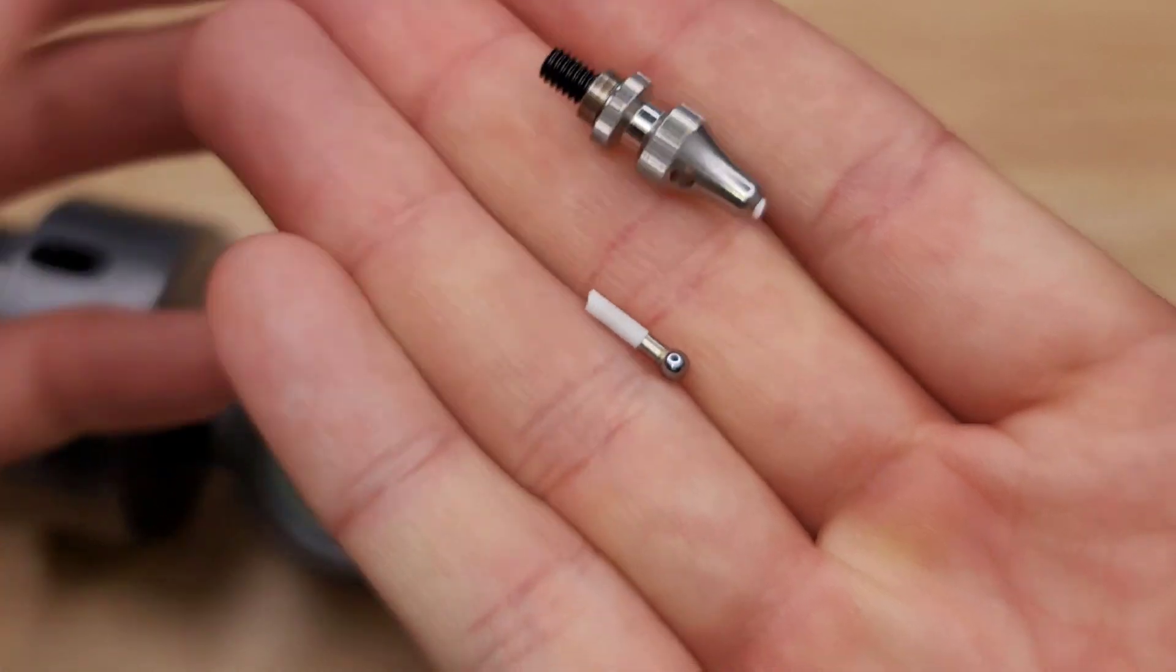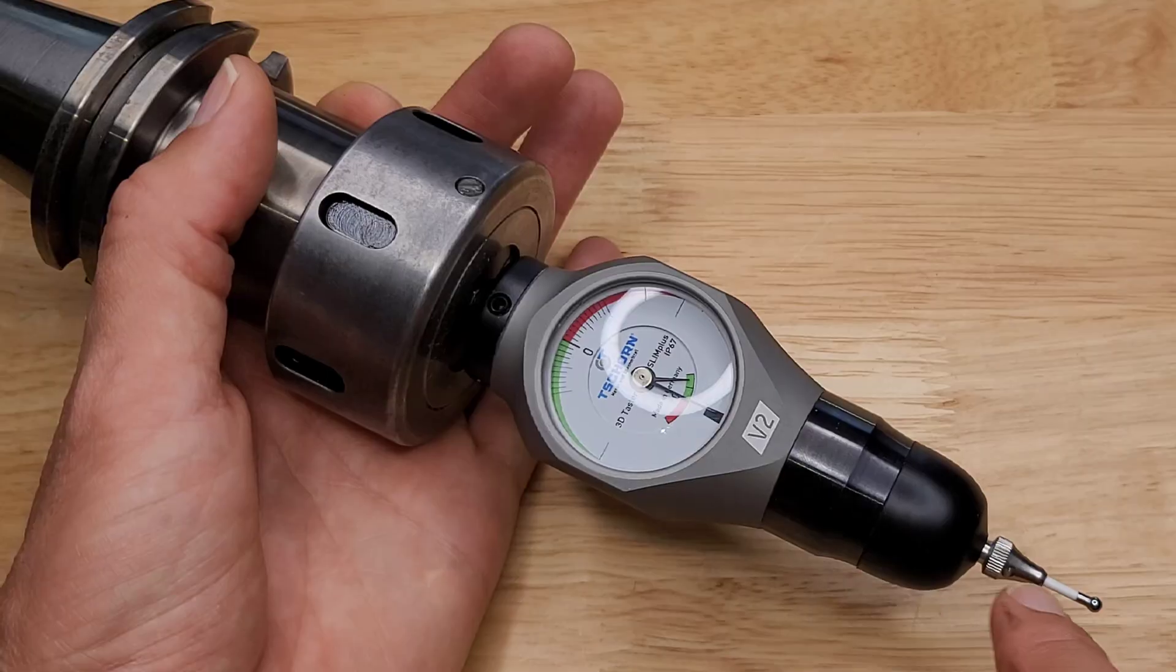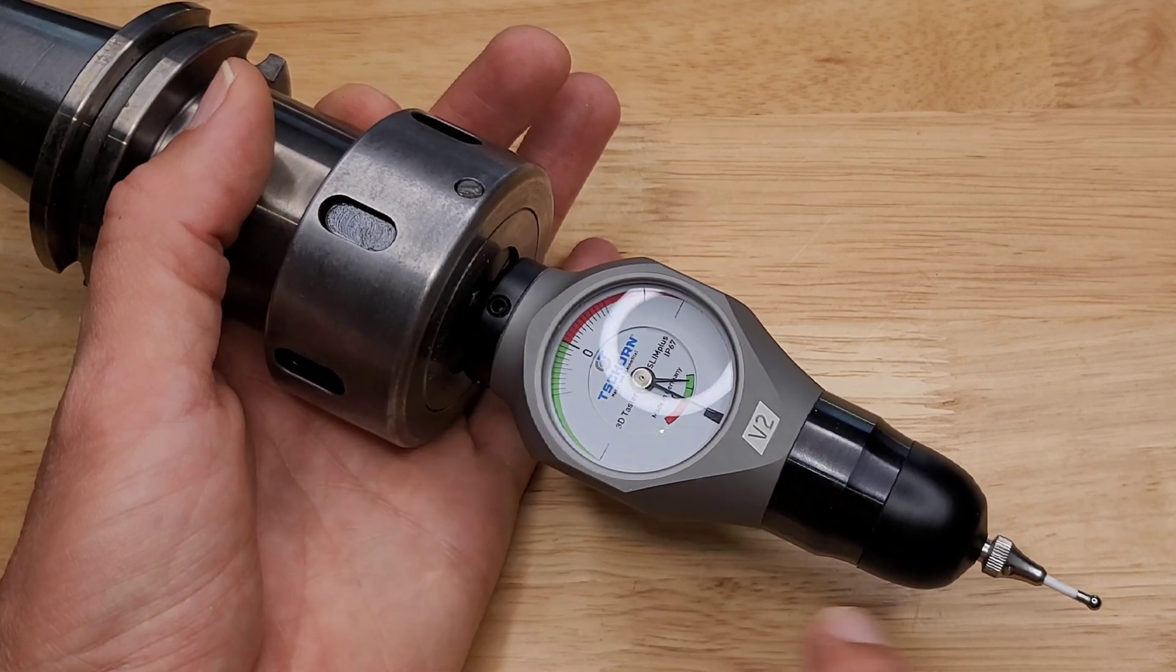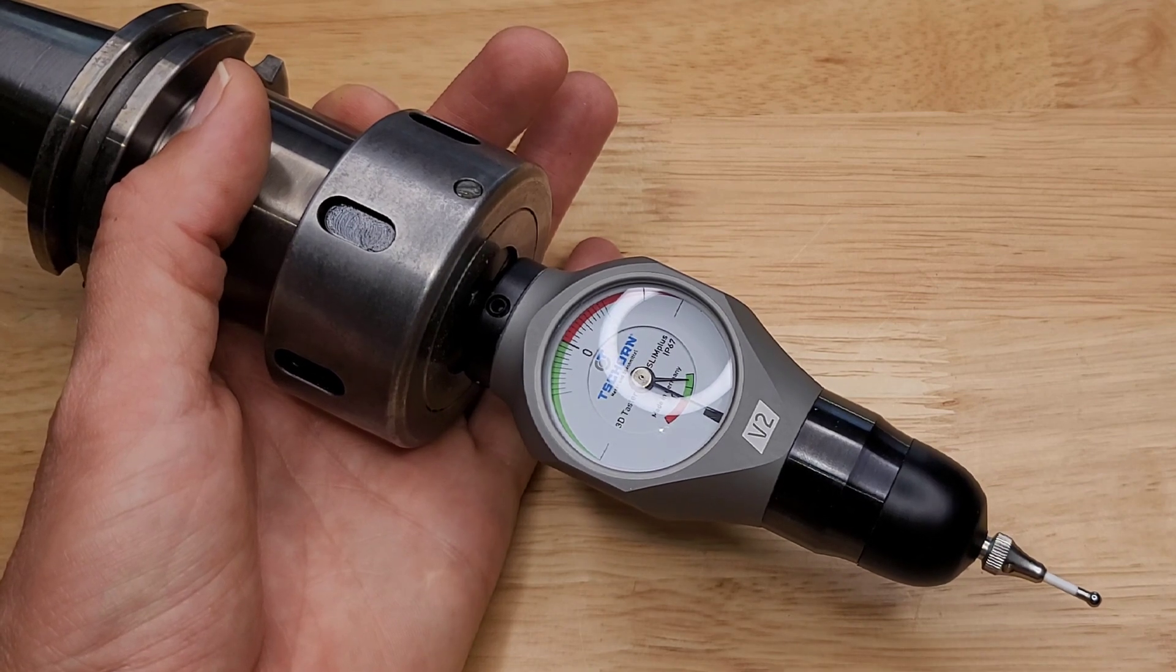And that's it. That's all you need to do to replace a broken tip on the Shorn 3D Taster. Now that you've replaced the tip, you're going to have to put it back on the machine and do the calibration again like you did in the beginning to make sure that the tip is properly centered using some dial indicators.